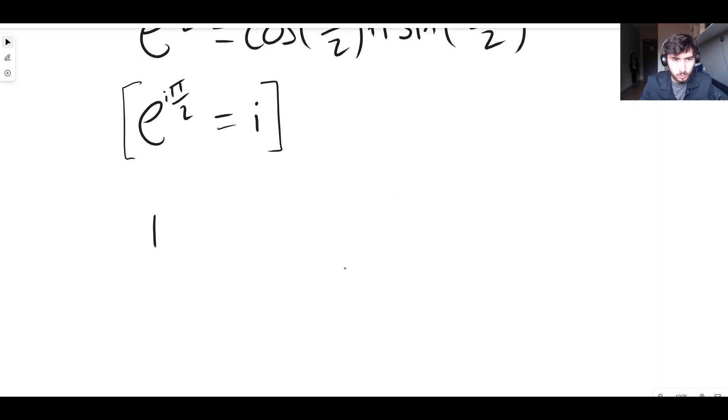So we can say that i, we've already written it technically, i is e to the i pi on two, which means that if i is e to the i times pi over two, that implies that i to the power of i is e to the i pi on two in brackets to the power of i, right? Because we're saying that i is e to the i pi on two.